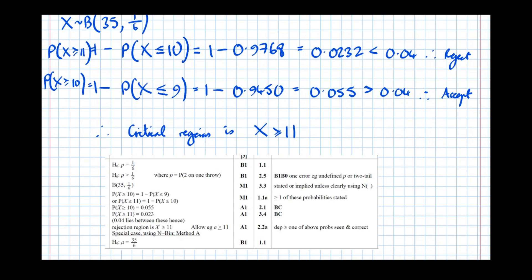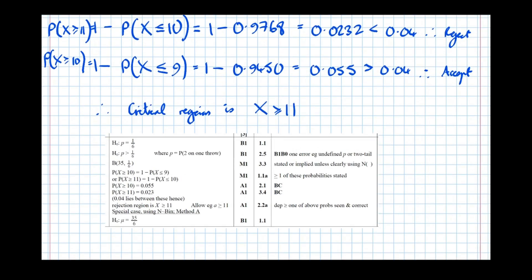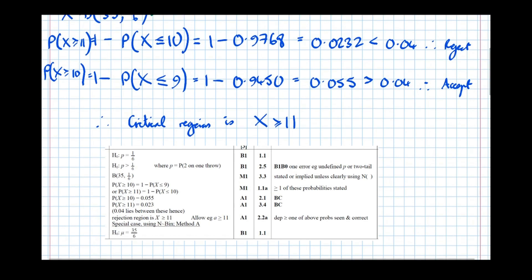Right. Binomial distribution, 35 a sixth. That's another mark. Probability that X is greater than 11 is 1 minus the probability that X is less than or equal to 10. Got that there. Then actually getting 0.055. Got that. 0.023. There it is there. 0.04 lies between these. Fair enough. So the rejection region is X greater than or equal to 11.